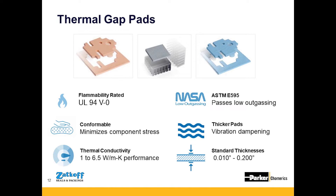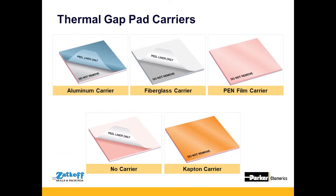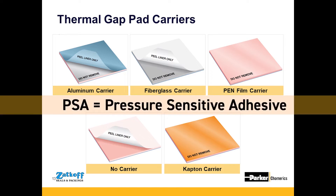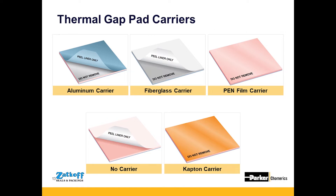Gap pads passing low outgassing according to NASA testing is an important requirement for customers with gap pads going into vacuum or space applications, or near camera or optical components. Low outgassing means the silicone that off-gasses won't condense onto the camera or other components in a compartment where it could be detrimental in an optical setting. Gap pads are offered on aluminum carriers with a PSA on the back for permanent attachment, as well as fiberglass, pen film, cap-on carriers, and sometimes no carrier at all.